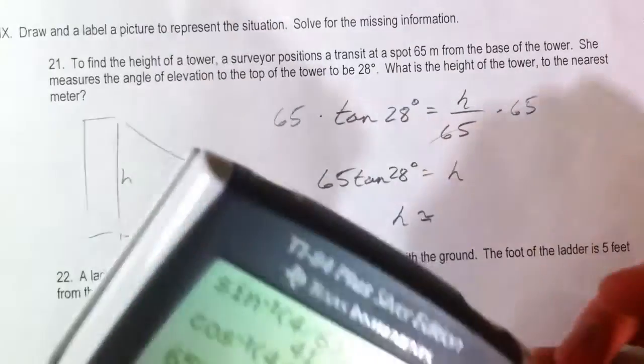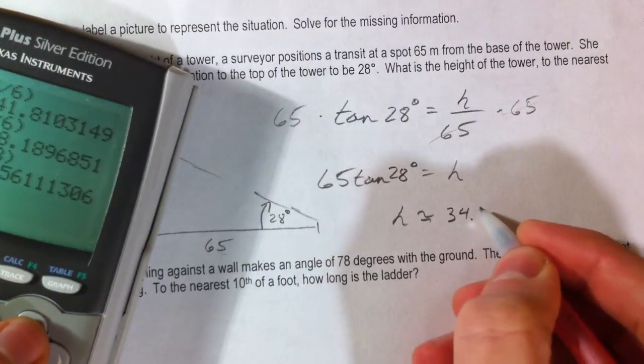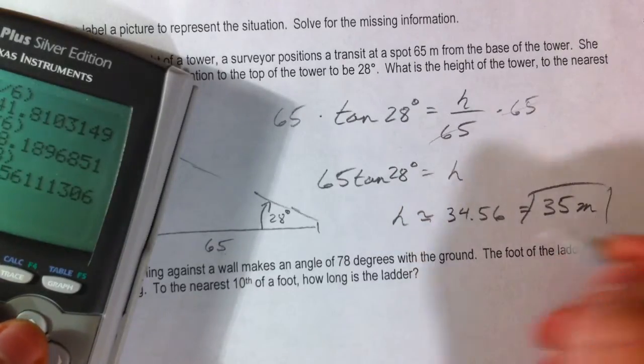The H is the nearest meter, so 34.56 would be 35 meters tall.